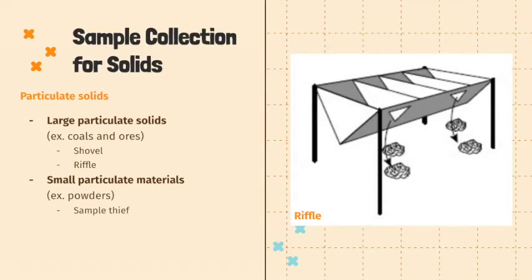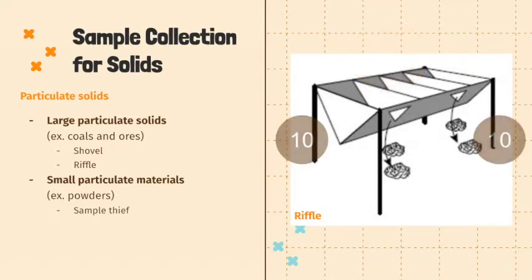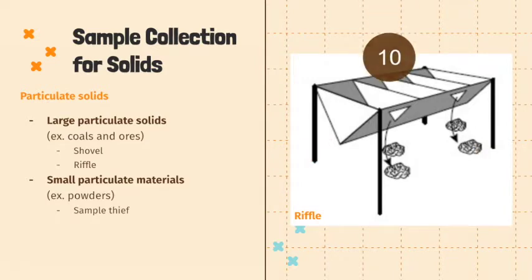For large particulate solids such as coal and ores, a shovel or riffle can be used. The riffle contains an even number of compartments where an opening is found on alternating sides. Every time the large particulate solids are dumped into it, they are divided into two by the riffle. This is repeated until the desired sample size is obtained.